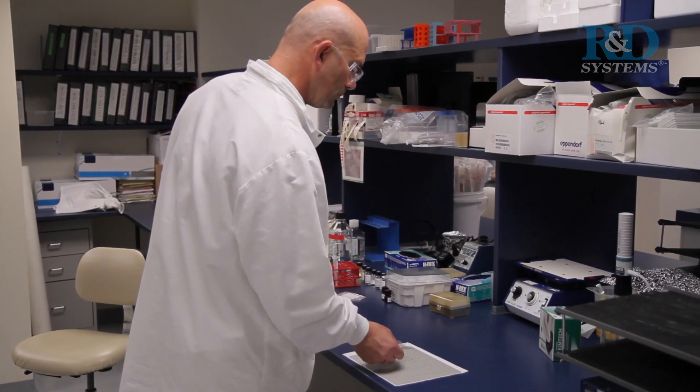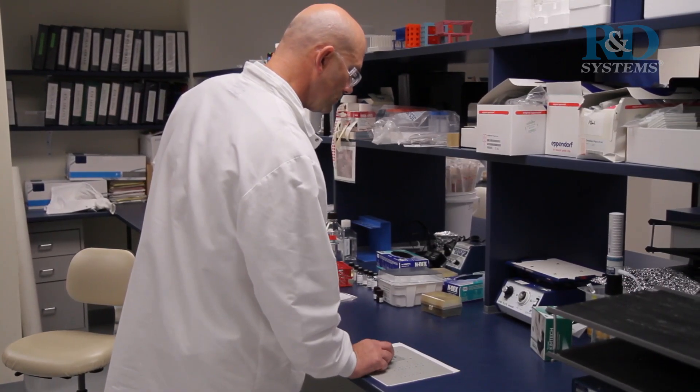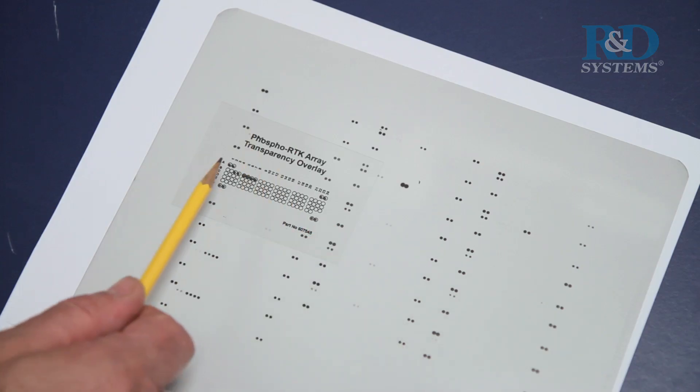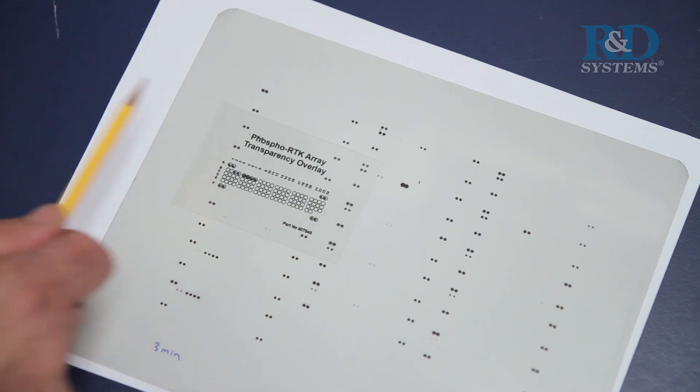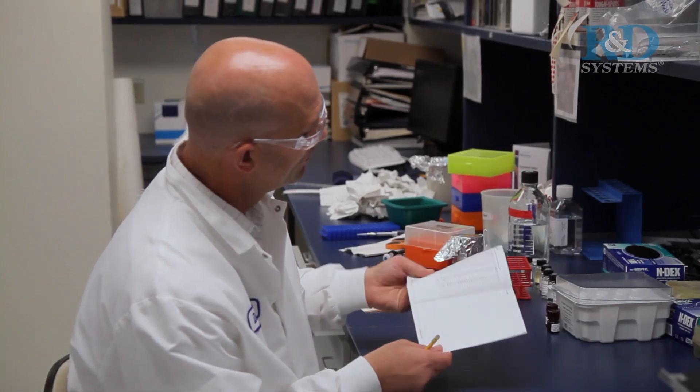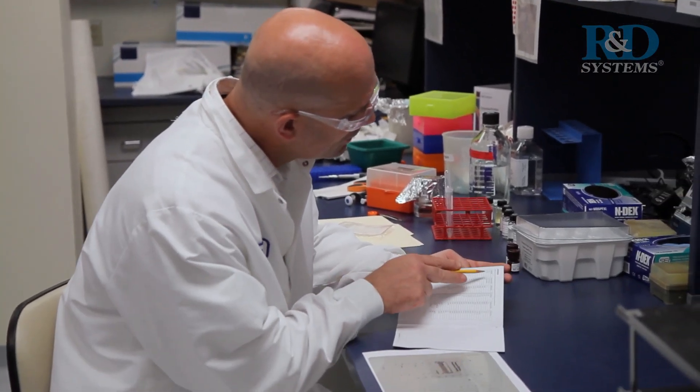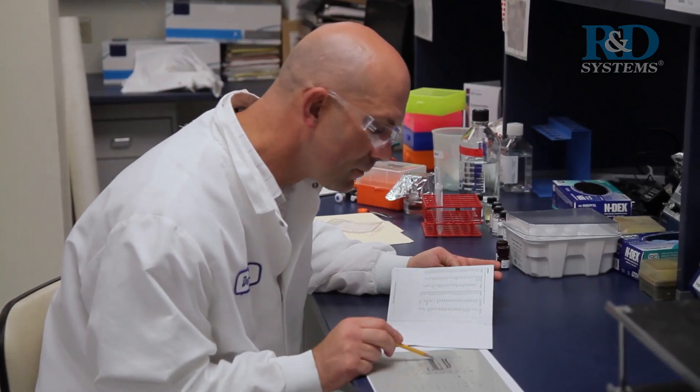Positive signals seen on developed film can be quickly identified by placing the transparency overlay on the array image and aligning it with pairs of reference spots printed in the corners for this purpose. The location of controls and capture antibodies is listed in the appendix of the Human Phospho RTK array data sheet.